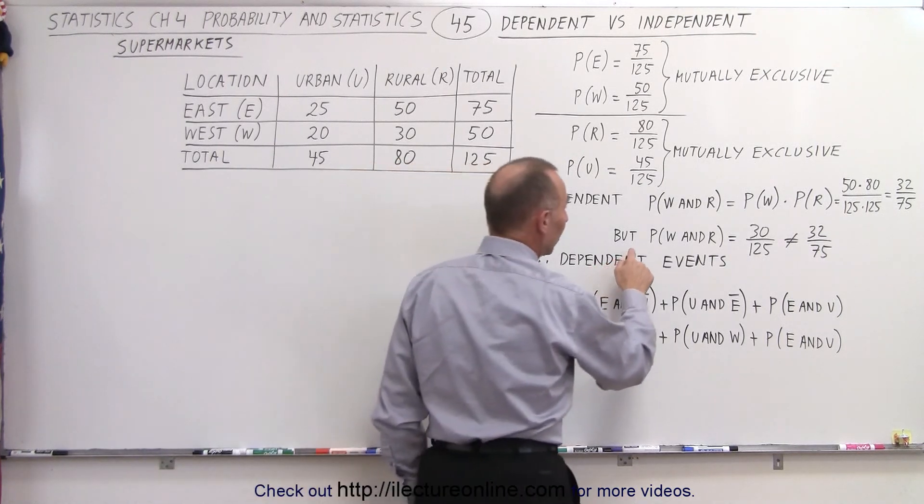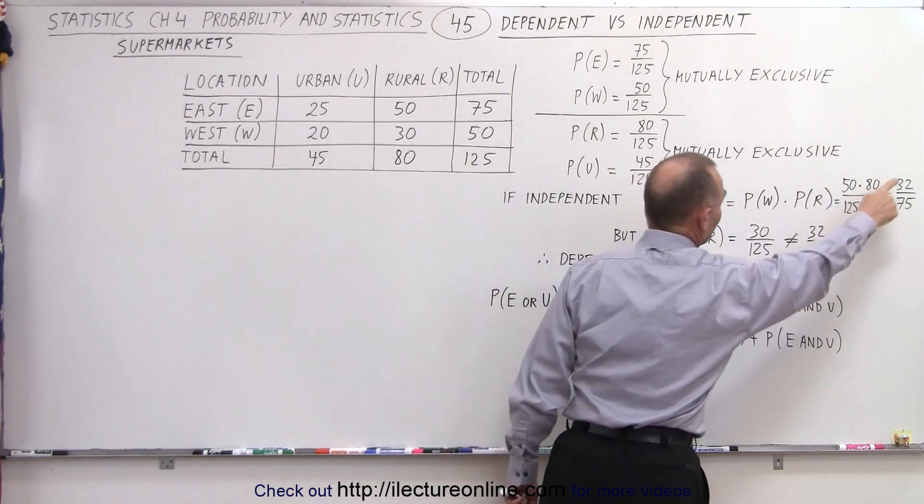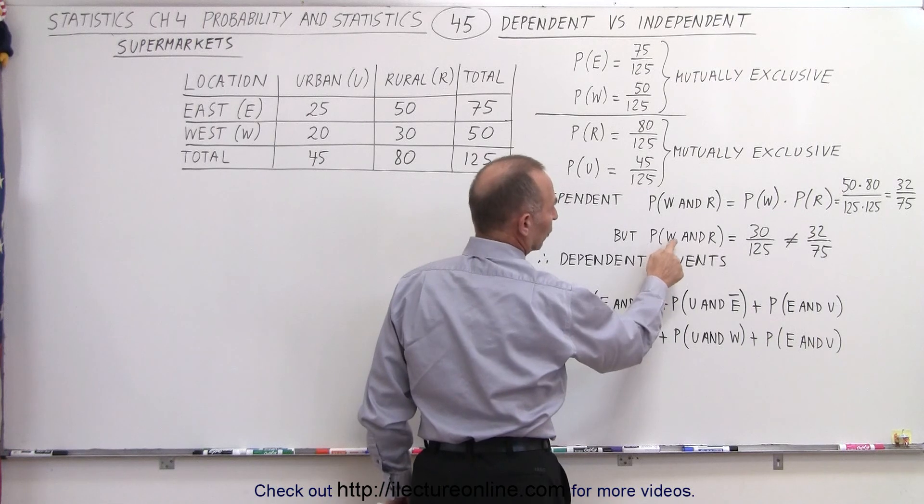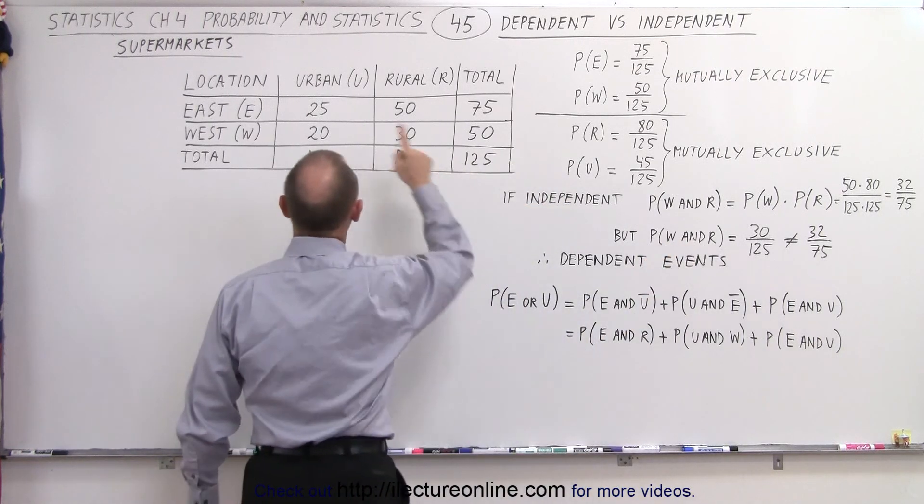But if we take a look at it we can see that if we work this out we get 32 over 75. But if you look for all the supermarkets that are both in the west and rural, we can do that over here.